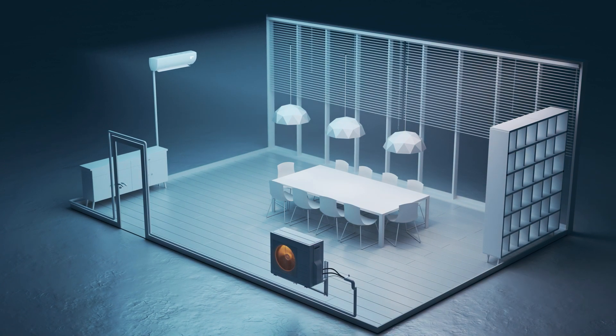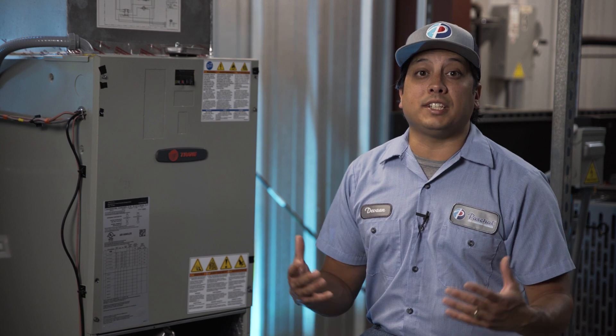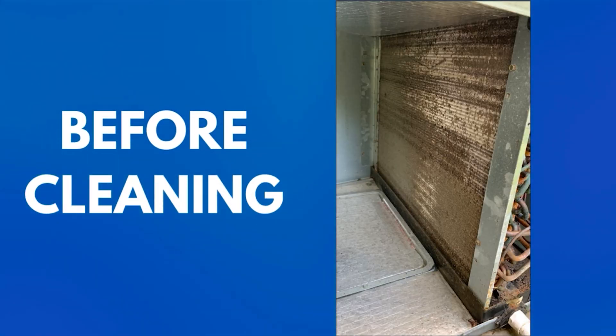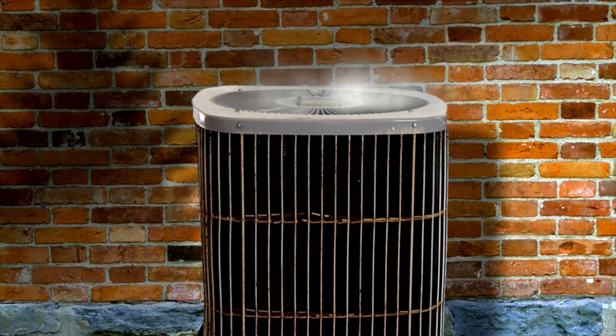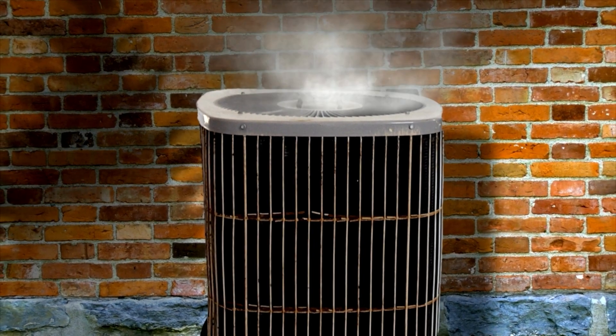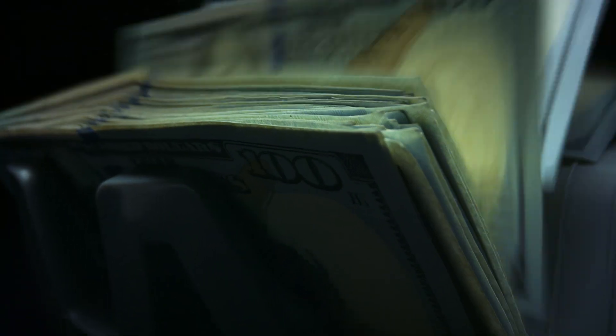The evaporator coil becomes damp during normal use due to the dehumidification process. If your evaporator coil becomes dirty, dirt, pollen, and other particles begin to stick to the evaporator coil as air passes through it. Dirty coils can use up to 40% more energy than air conditioning units with clean coils, as well as reducing the cooling function by an estimated 30% or more. Not only will your AC unit continue to lose performance and efficiency, but your monthly utility bills will continue to skyrocket if your dirty coils are left uncleaned.